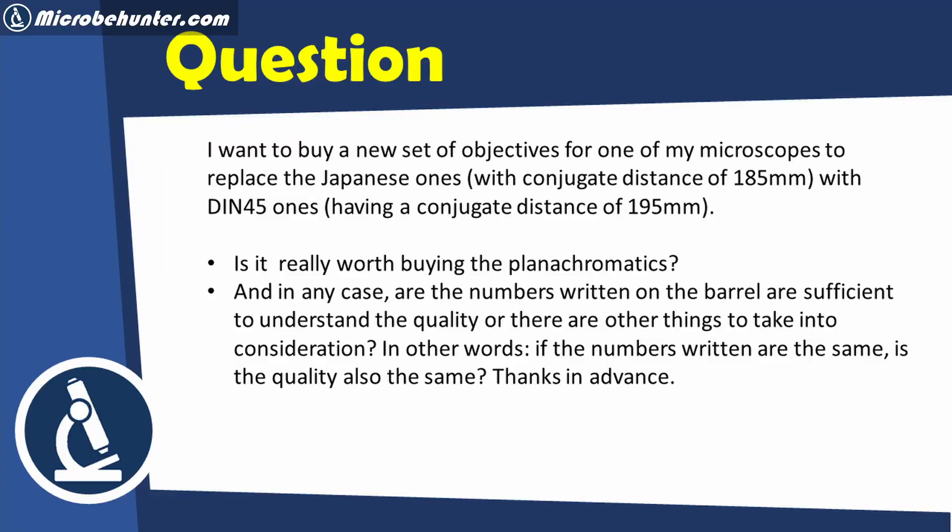I'm going to read it out first. I want to buy a new set of objectives for one of my microscopes to replace the Japanese ones with a conjugate distance of 185 mm with DIN 45 ones, which have a conjugate distance of 195 mm. Is it really worth buying the Plan Achromatics? And in any case, are the numbers written on the barrel sufficient to understand the quality, or are there other things to take into consideration? In other words, if the numbers written are the same, is the quality also the same?